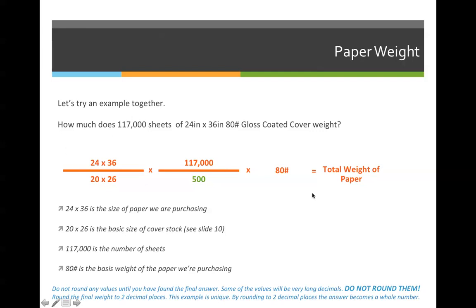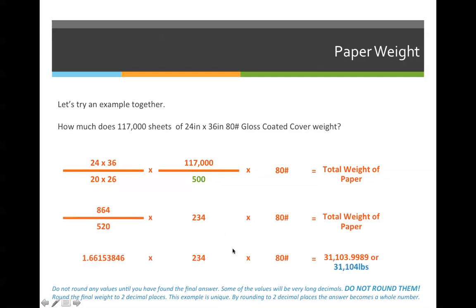When we fill out this problem, we have to do it in multiple steps. I can't just simply work from the left to the right and get the correct answer. I need to multiply 24 times 36 and 20 times 26 to get single numbers that I can then divide the top of the equation by the bottom of the equation. So the first step after I've identified this first row as my equation is I'm going to start simplifying across the board. 24 times 36 is 864. 20 times 26 is 520.